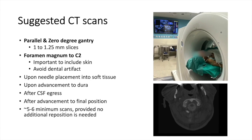CT image acquisition should be parallel with zero gantry tilt, using 1 to 1.25 millimeter slices from the foramen magnum to the inferior portion of C2, with a wide field of view so as to see the skin. The field of view should then be narrowed to avoid dental artifact.